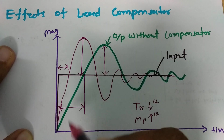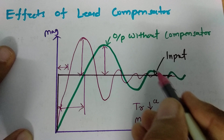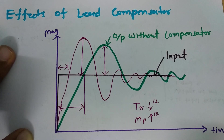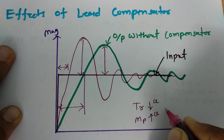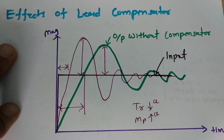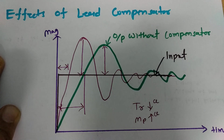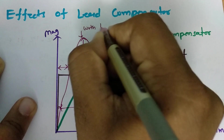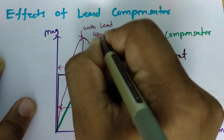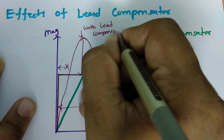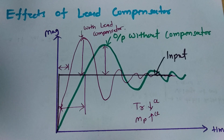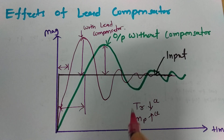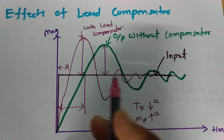And one thing that even one can see: after adding the lead compensator, stability is increasing. So one can say stability increases. Based on this diagram, with the lead compensator: rise time goes down, peak overshoot may go up, and stability increases.